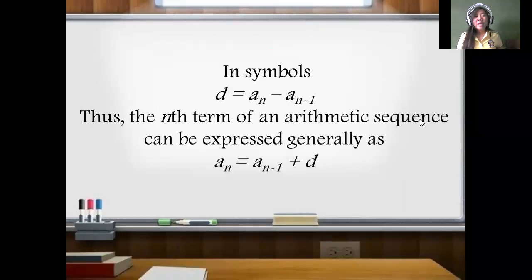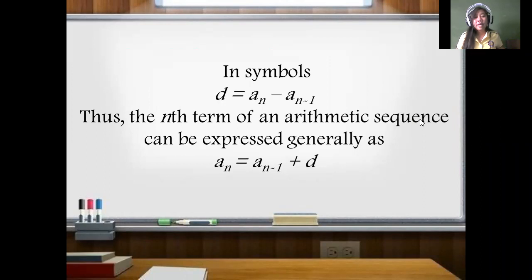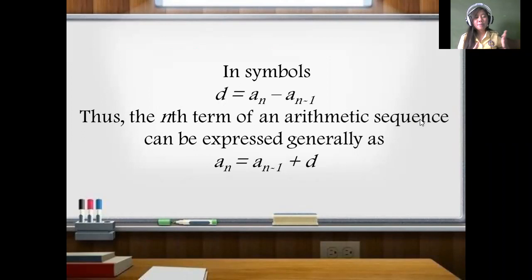In symbol, D or the common difference is equal to A sub N minus A sub N minus 1. The N-th term of an arithmetic sequence can be expressed generally as A sub N is equal to A sub N minus 1 plus D, where N is the term position in the sequence — specifically, the missing term we are looking for.